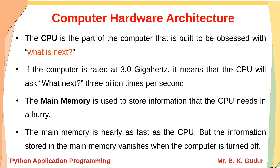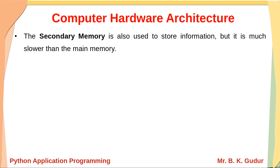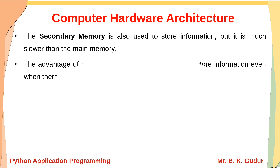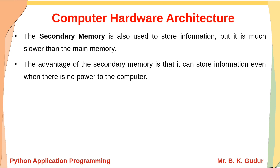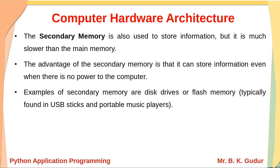However, the information stored in main memory vanishes when the computer is turned off. To store information even without power, we require secondary memory. Secondary memory is also used to store information but is much slower than main memory. The CPU gets answers from main memory, which in turn fetches from secondary memory. Secondary memory can store information even when there is no power. Examples include disk drives and flash memories like pen drives and USB sticks.